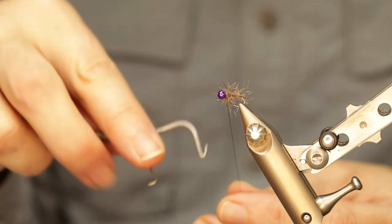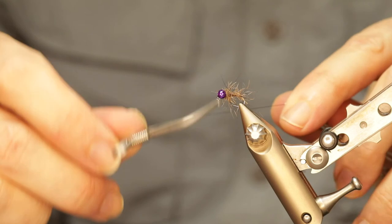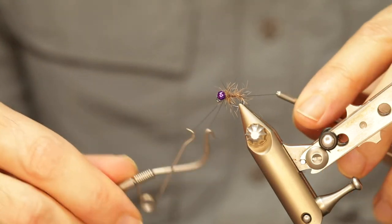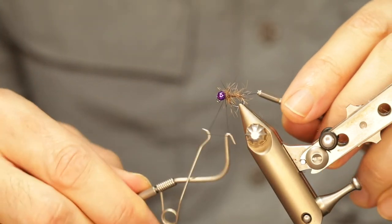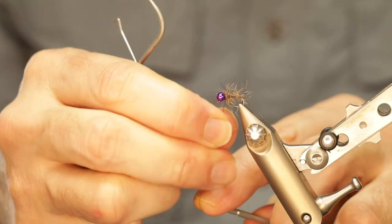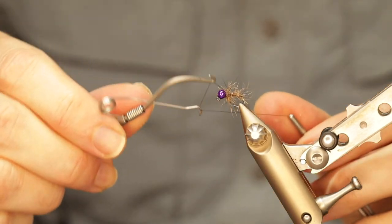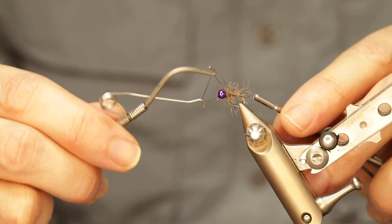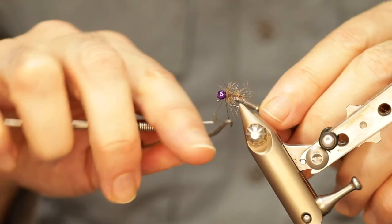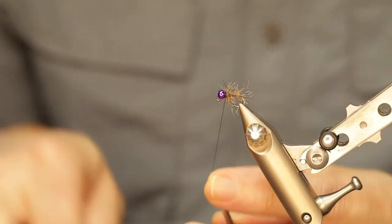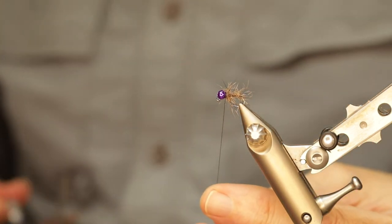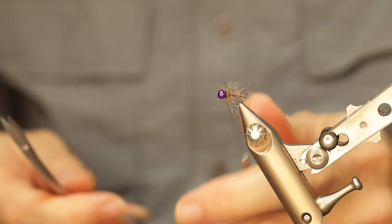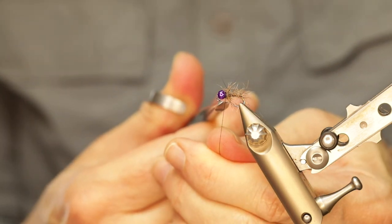Now for the whip finish. So whip finish a few times to secure it. There's once. Give it a gentle pull to secure that and then a second one around to finish off. Cut your thread and the fly is pretty much complete.